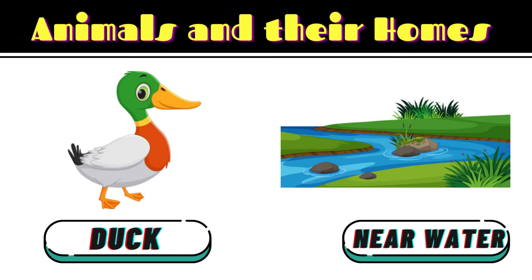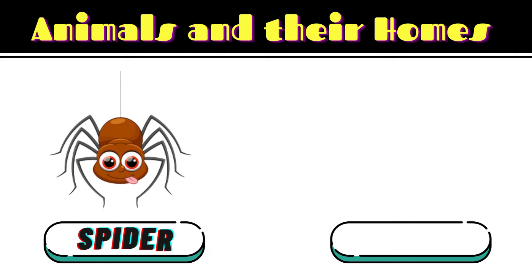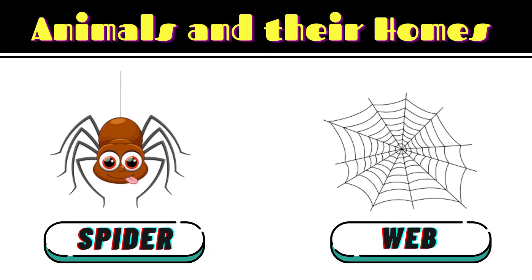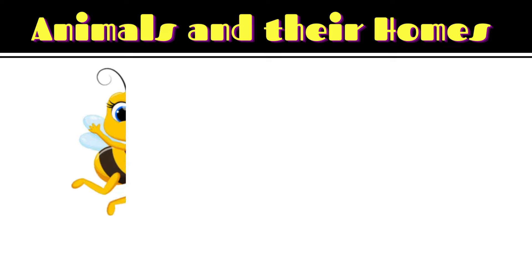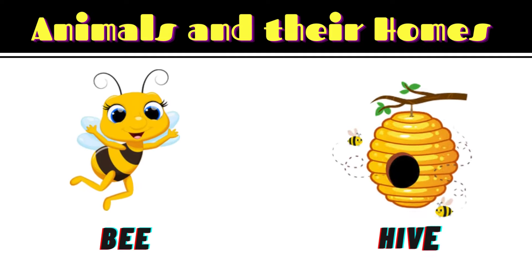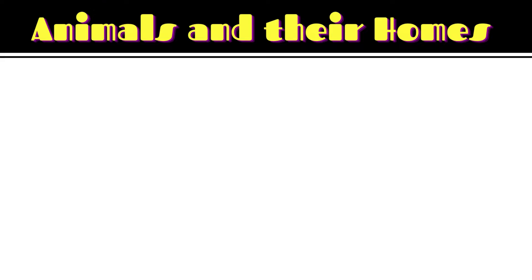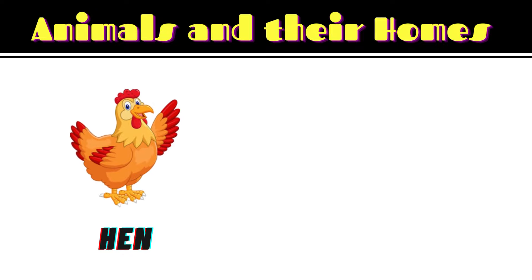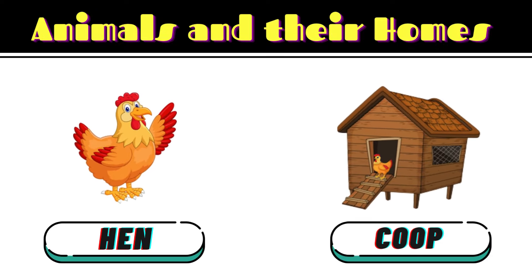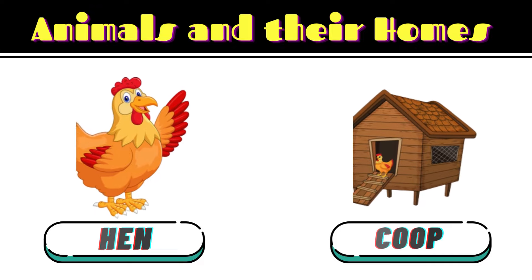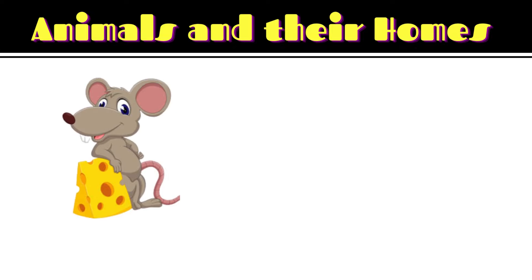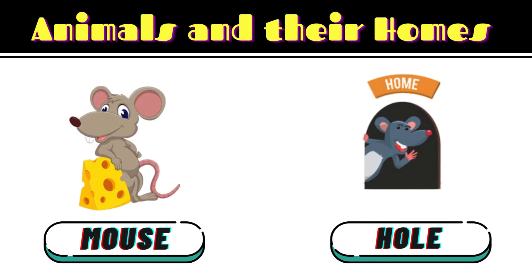Duck. Ducks live near water, ponds, rivers or lakes. Spider. Spider lives in a web. Bee. Bee lives in a beehive. Hen. Hen lives in a coop. Mouse. Mouse lives in a hole.